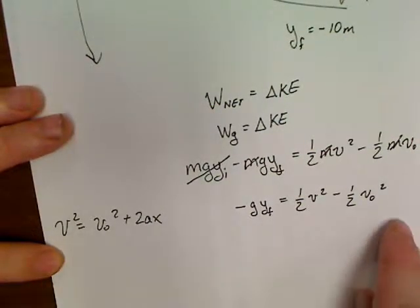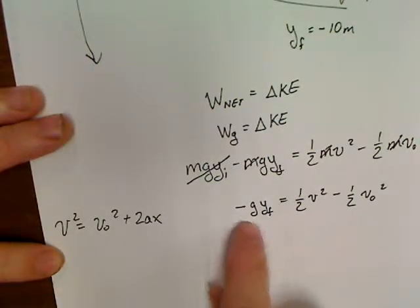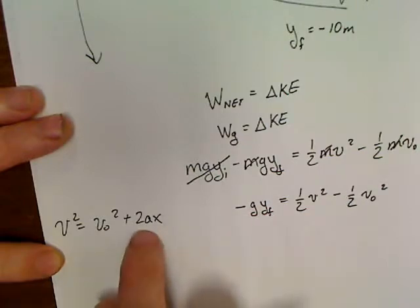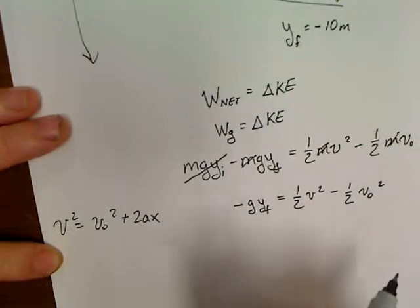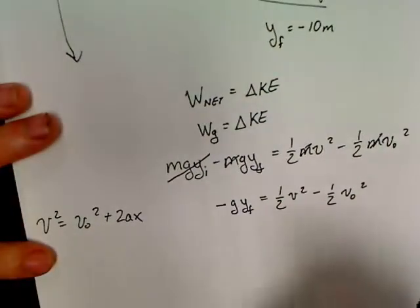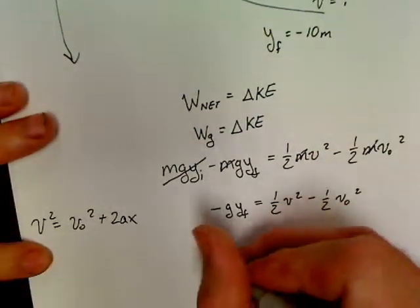But anyway, we can go ahead and plug in our numbers. Negative 9.8. Negative 9.8 times, what we've got here, Y is negative 10, is Y final.